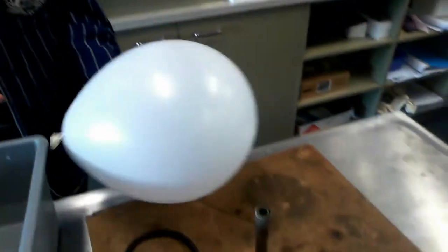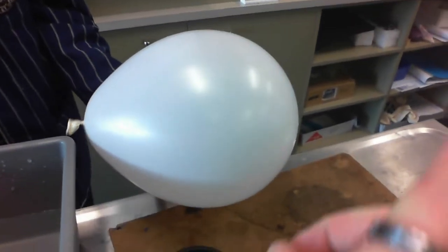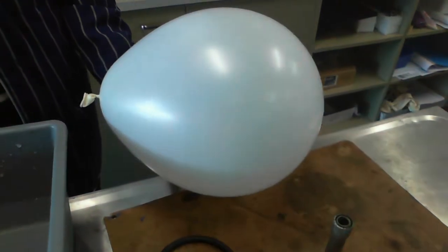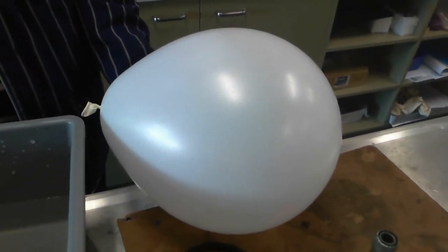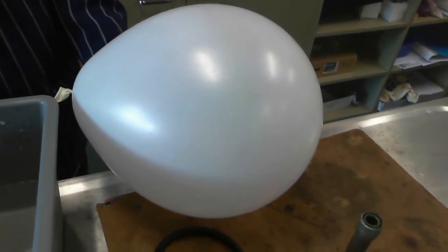So what we've got here is a balloon and the forces acting on a balloon, the outward forces, are given by the air pressure inside it. So there's actually a higher air pressure inside than on the outside.